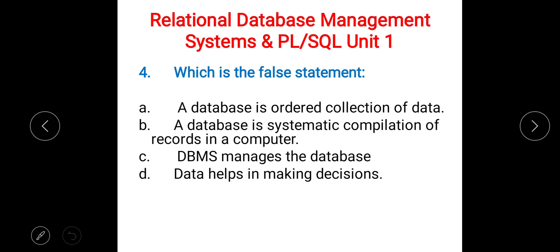Next question: which is the false statement? A) A database is an ordered collection of data, B) a database is a systematic complete compilation of records in a computer, C) the DBMS manages the database, D) data helps in making decisions. The right answer is A) the first one.